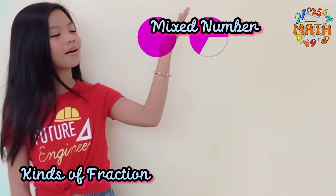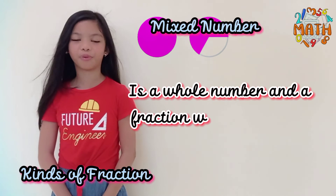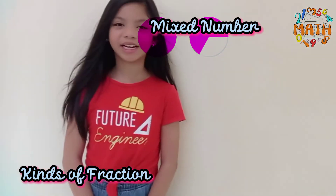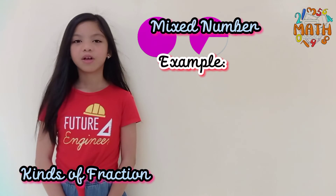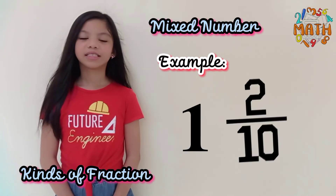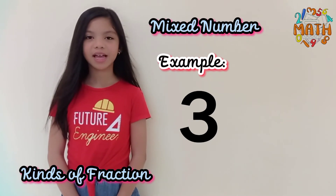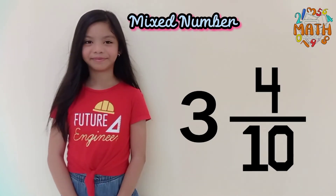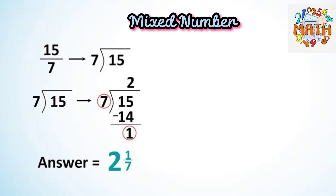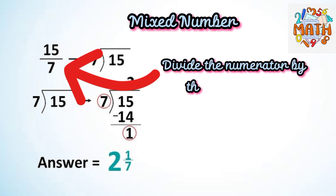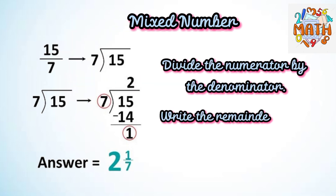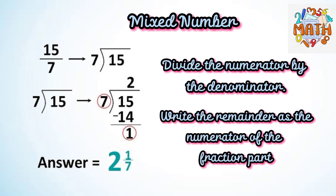A mixed number is a whole number and a fraction written together. Here are the examples of mixed numbers. An improper fraction may be renamed as a mixed number or a whole number: divide the numerator by the denominator and write the remainder as the numerator of the fraction part. The application of fractions in everyday life are endless.